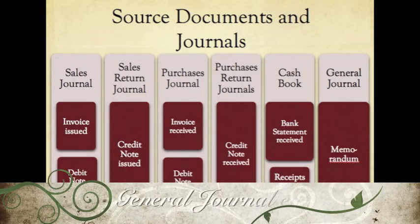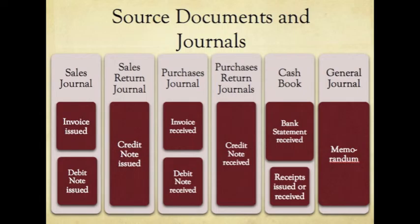For general journal items, if a non-current asset is bought on credit, we normally receive an original invoice. For other items, a memorandum — or memo — is used. For example, if the owner says they are going to withdraw an amount for personal use, that memo is sufficient as a source document for the general journal entry.